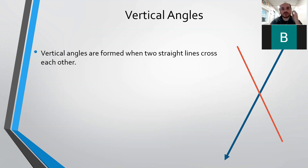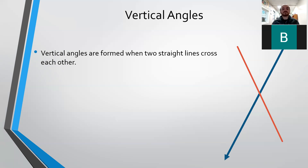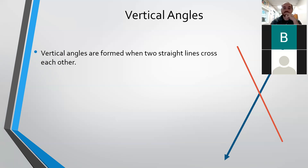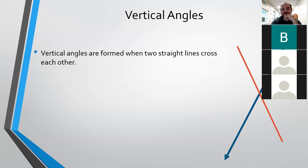Does anybody remember what we said? What are parallel lines? Can anybody tell me? Two lines are going the same way next to each other — so they're two lines that never cross each other. Does anybody remember what a transversal is? It's a line that cuts two parallel lines at the same angle. Yes, it is a line that cuts two parallel lines at the same angle.